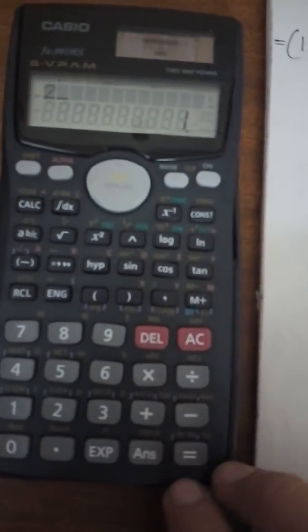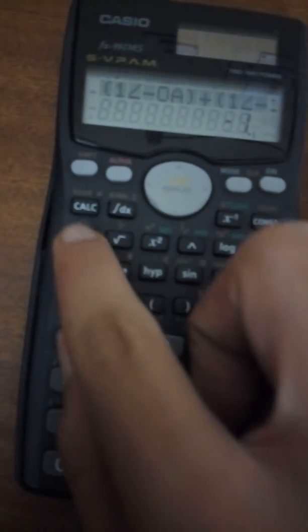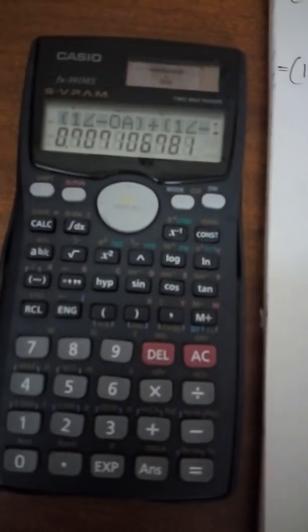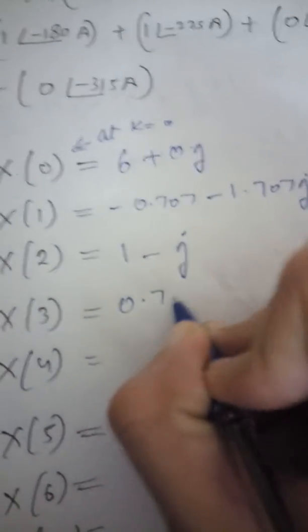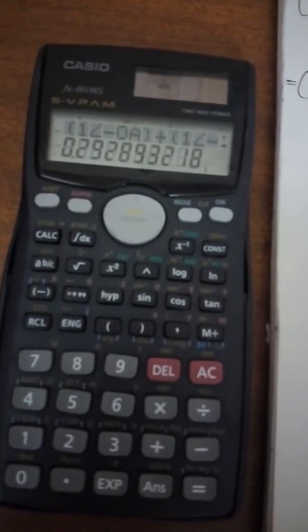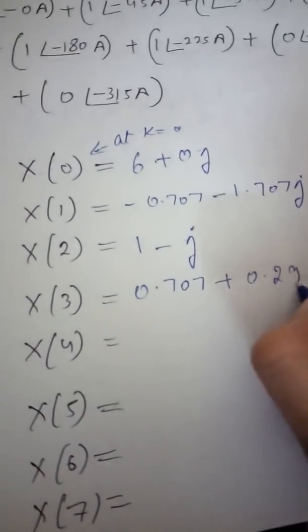Press Calc again and enter A equals 2 for X(2). The real part is 1, and Shift equals gives minus 1j, so X(2) equals 1 minus j. Press Calc and enter 3 for X(3): the real part is 0.707, and Shift equals gives 0.29j.